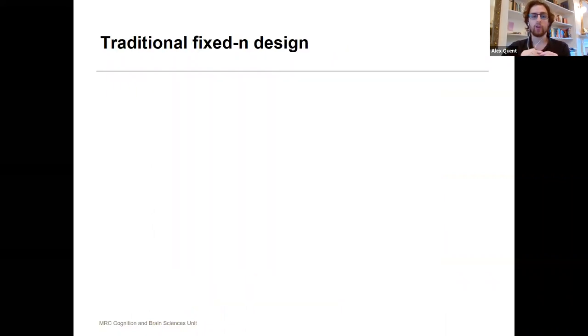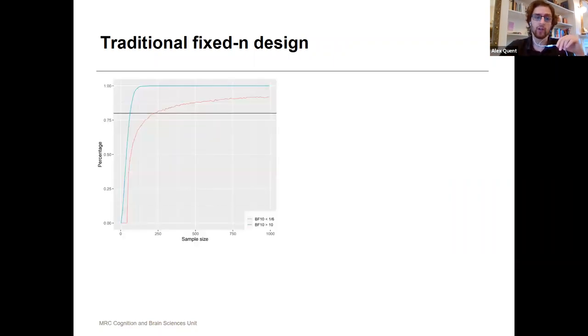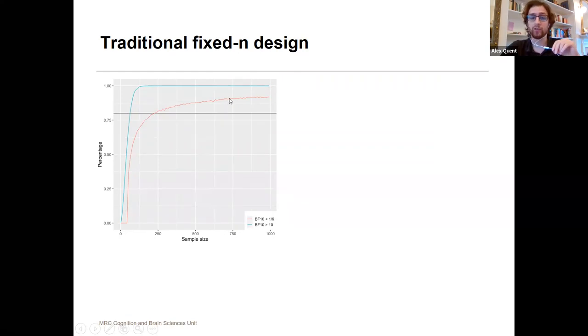Let's look at how we do this in a traditional fixed-n design. What you see here in this graphic is I ran a simulation for a couple of sample sizes 10,000 times, and I plotted a curve. For a medium effect size of 0.5, how often do I get a Bayes factor of 10? When does this reach 80% probability? That's the blue curve here, and for the red curve,